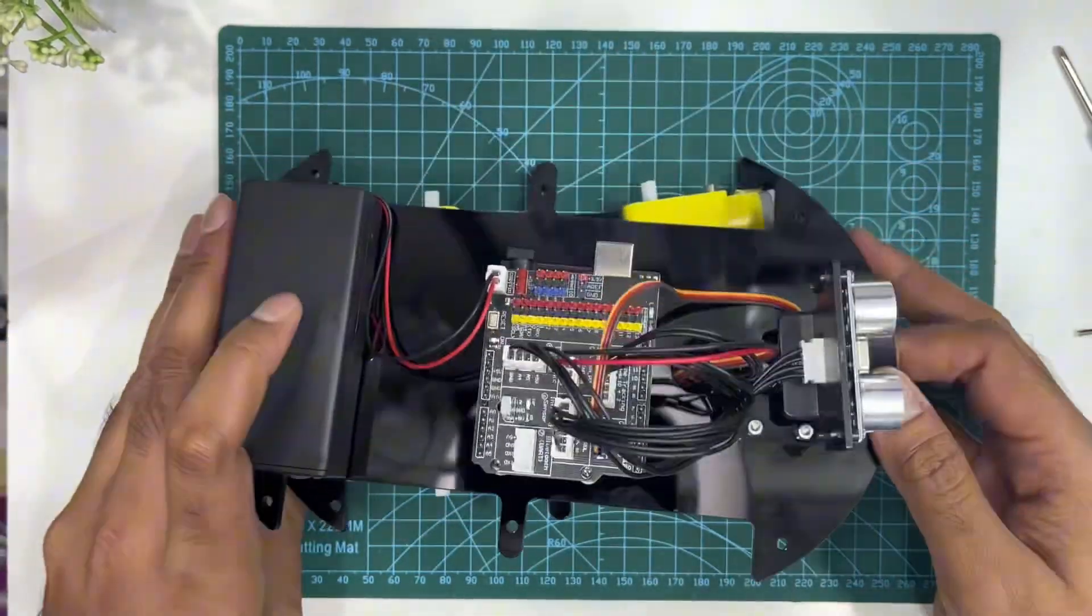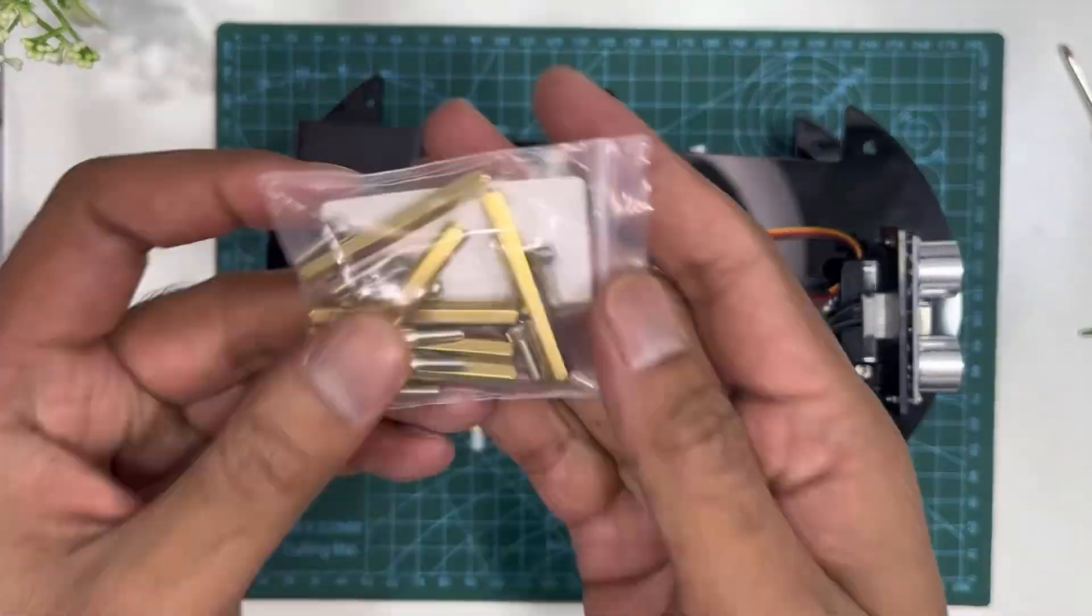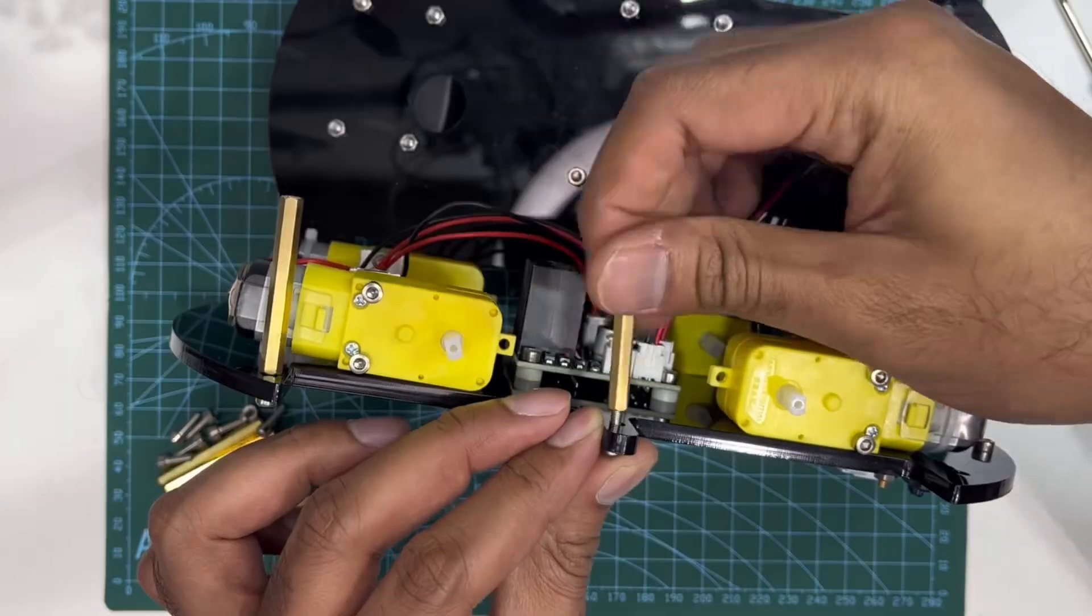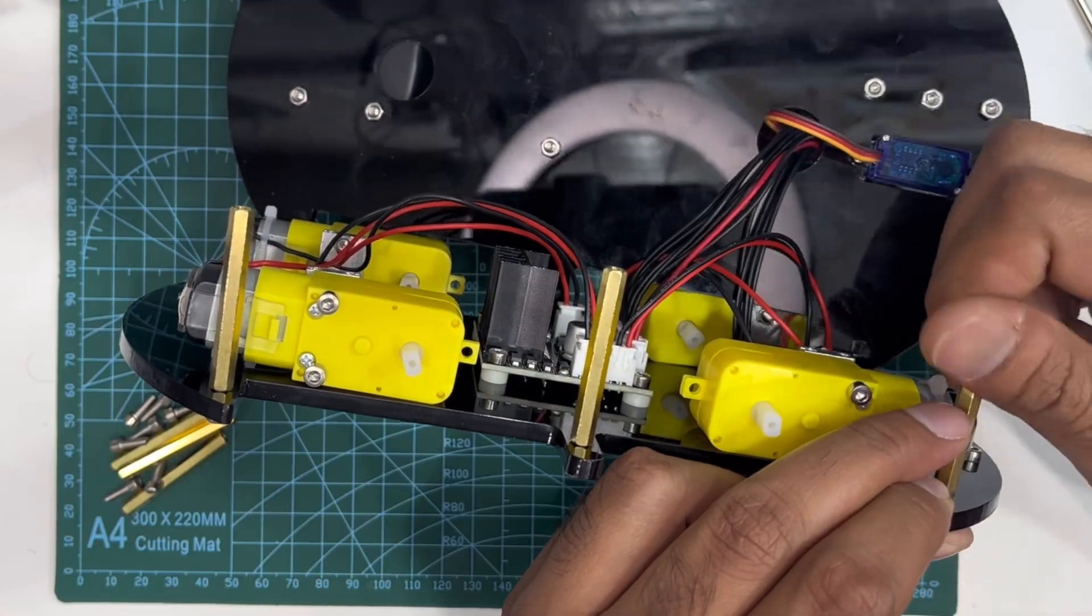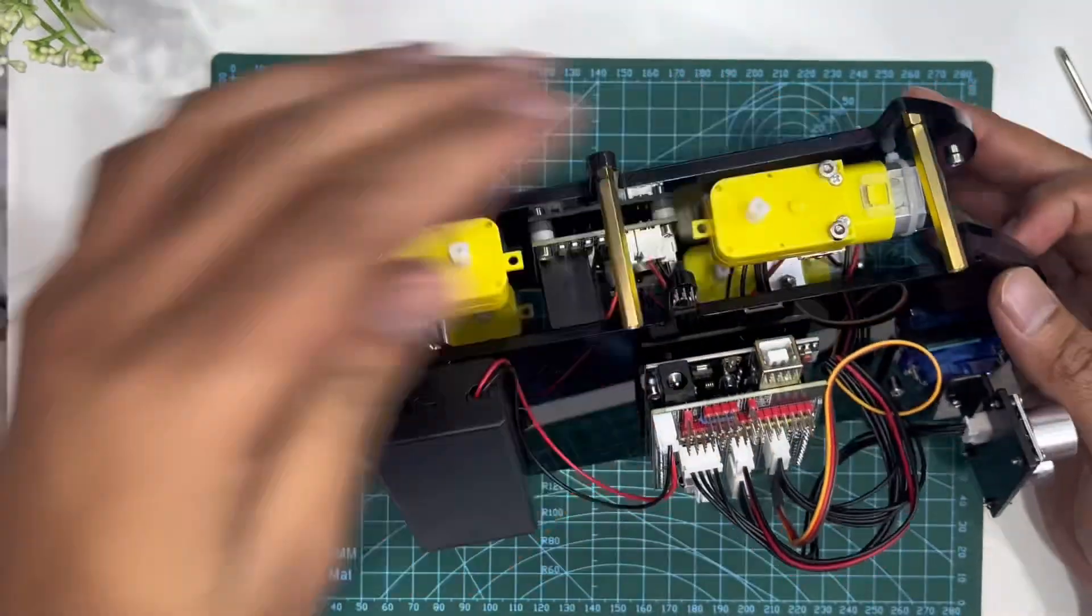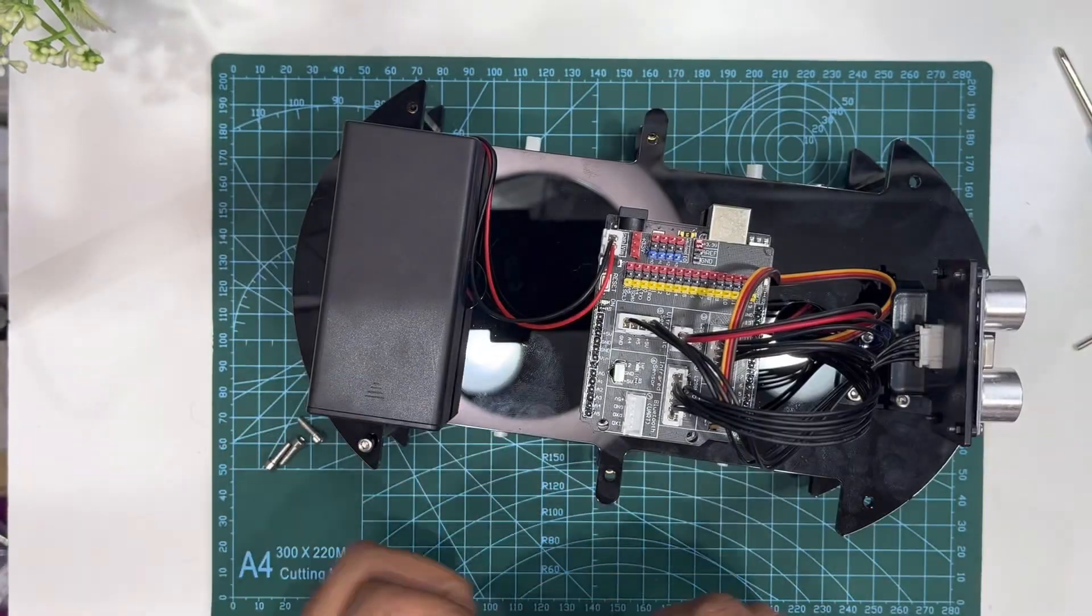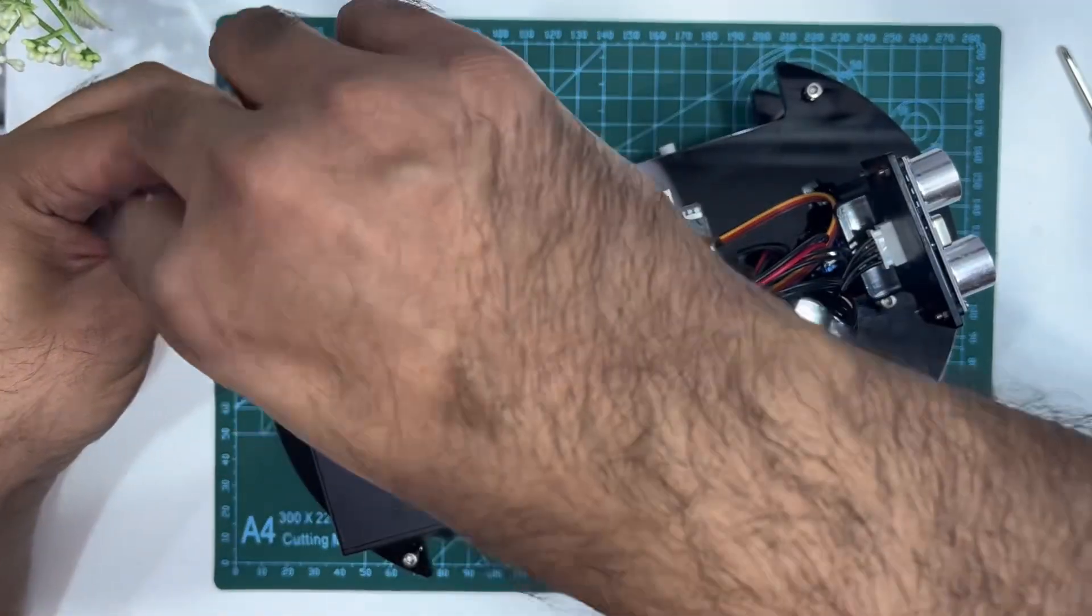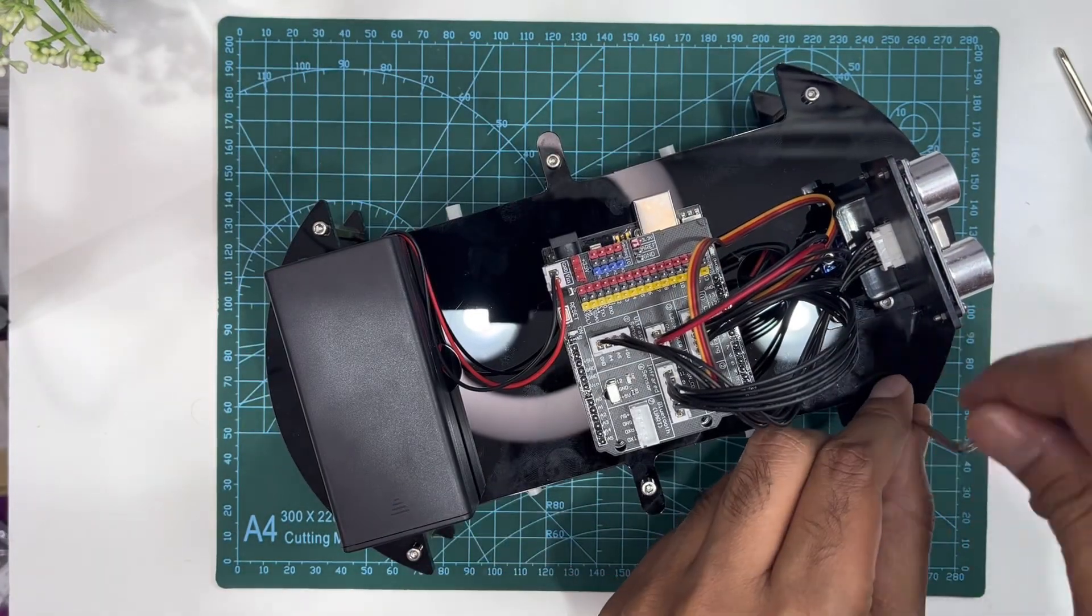Now we will attach the top and bottom plates of our robot car for maximum stability. Install six M3 by 40 copper standoffs on the lower plate. After that, carefully place the top chassis matching all cutouts. Secure with M3 by 10 screws.